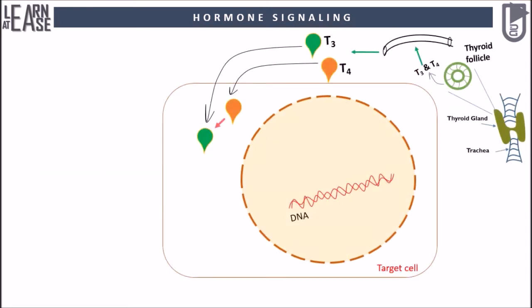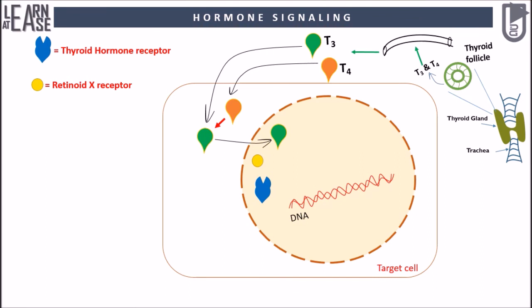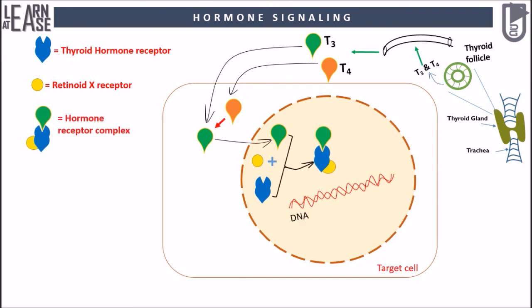After T4 gets converted to T3, all the T3 enters the nucleoplasm through the nuclear pore complex. In the nucleoplasm there exist thyroid hormone receptor and retinoid X receptor. As soon as T3 enters the nucleoplasm, a trimeric complex of T3, thyroid hormone receptor, and retinoid X receptor is formed.